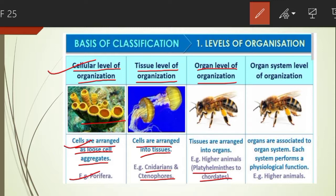The fourth is the organ system level of organization. In animals like Annelids, Arthropods, Mollusca, Echinoderms, and Chordates, organs are associated to form functional systems, each system concerned with a specific physiological function.